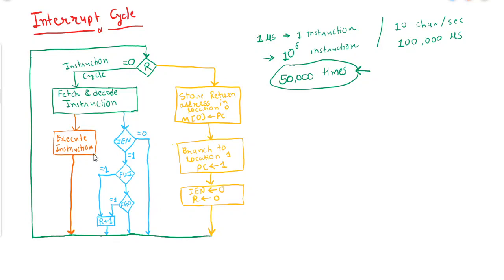So how can we improve the utilization time of the computer? To effectively utilize the CPU, we will use the interrupt cycle. As you can see in the figure, the interrupt cycle has various components: the instruction cycle, the interrupt checking mechanism to check whether input or output is ready, and the interrupt subroutine.